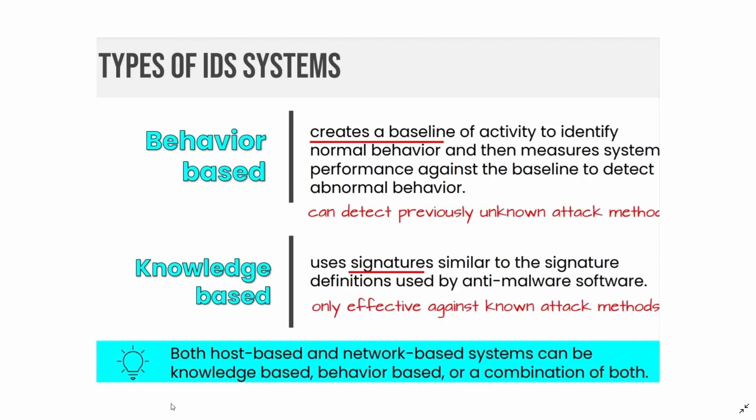There are two types of IDS systems: behavior-based and knowledge-based. Behavior-based creates a baseline of activity to identify normal behavior, then measures system performance against the baseline to detect abnormal behavior — this type can detect previously unknown attack methods. Knowledge-based uses signatures similar to those used by anti-malware software and is only effective against known attack methods. Both host-based and network-based systems can be knowledge-based, behavior-based, or a combination of both.